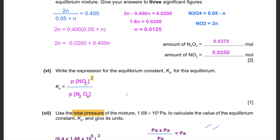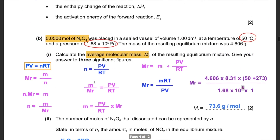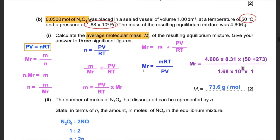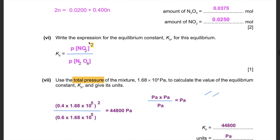Now write the expression for the equilibrium constant Kp. Place products over reactants and use the coefficients as powers. The coefficient of N₂O₄ is 1 (not written) and of NO₂ is 2. So: Kp = (partial pressure of NO₂)² / (partial pressure of N₂O₄).